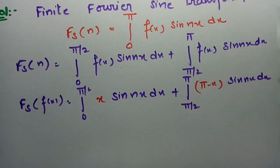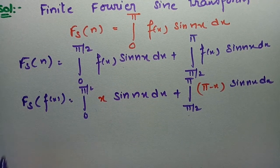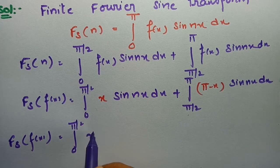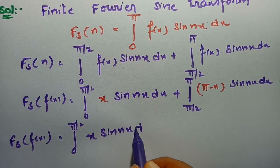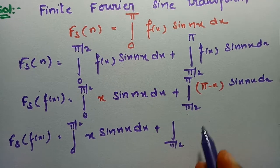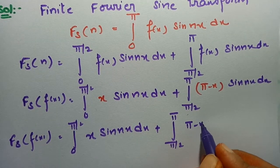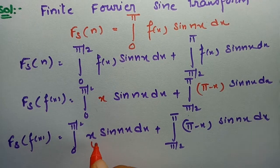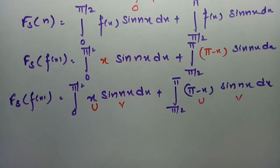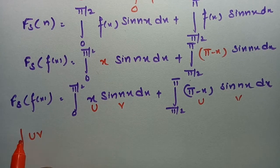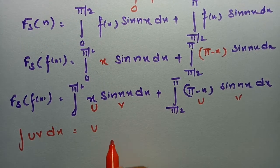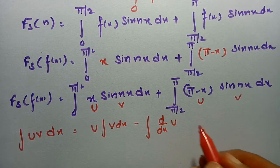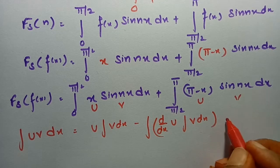This is integration by parts — we have to use the UV rule. The integral of u·v dx equals u times the integral of v minus the integral of (d/dx of u) times (integral of v) dx.